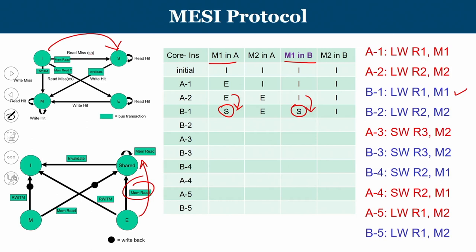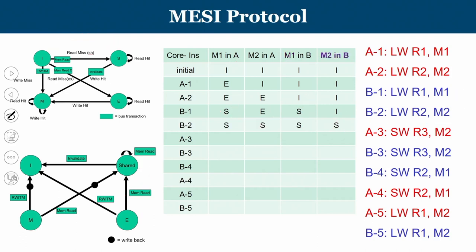Next is B2 — performing a read on M2. A similar event occurs: M2 in A transitions from E to S, and M2 in B transitions from I to S. At the end of B2, all four entries — M1 in A, M1 in B, M2 in A, and M2 in B — are in the Shared (S) state.